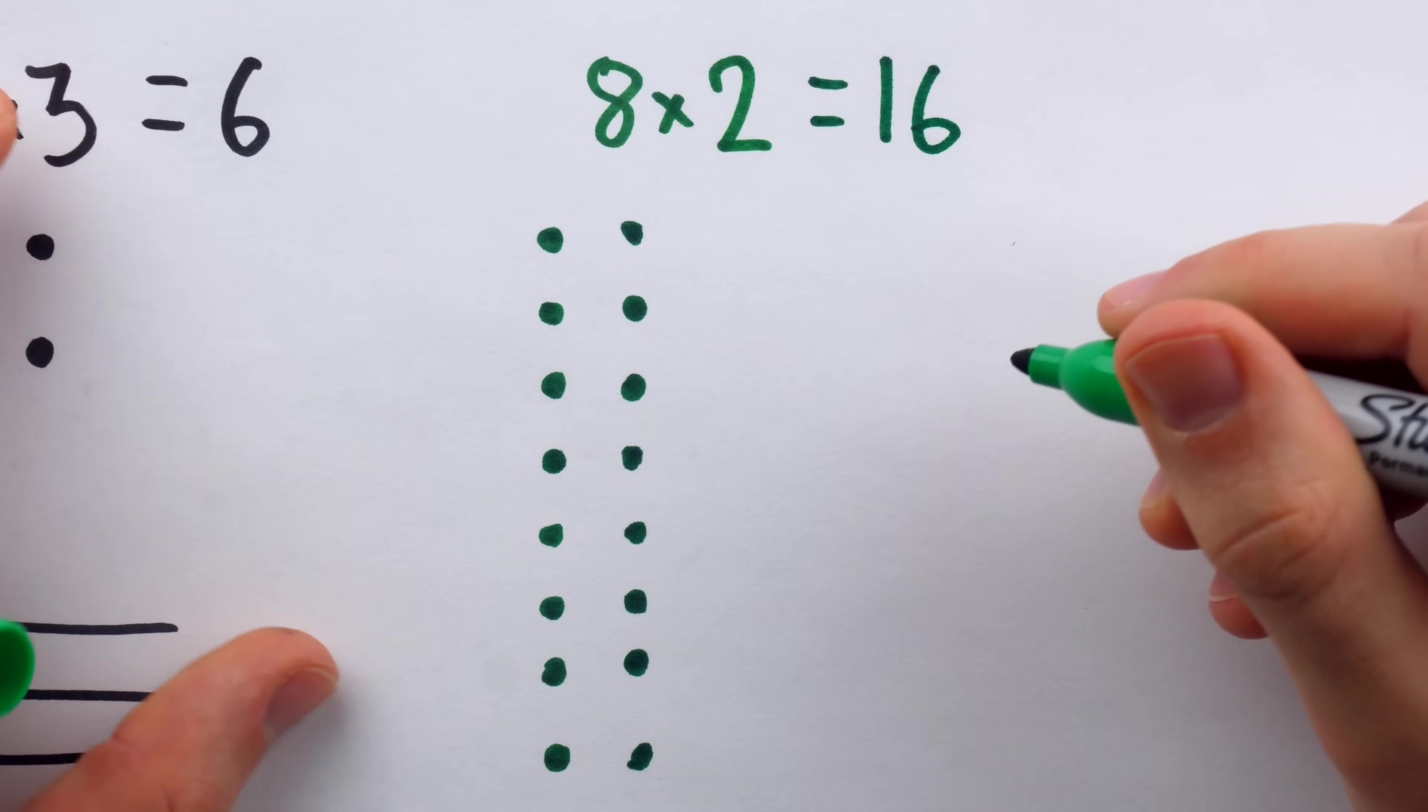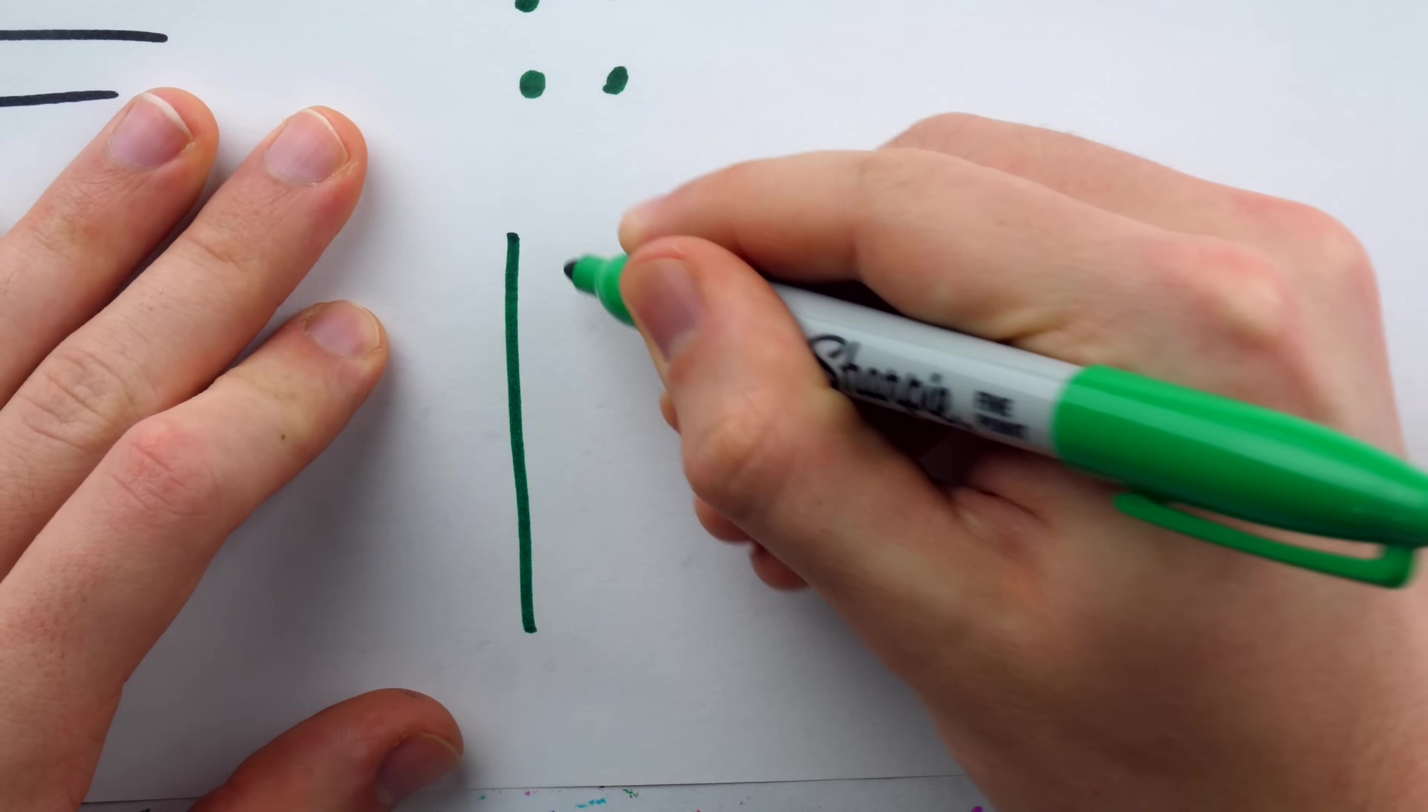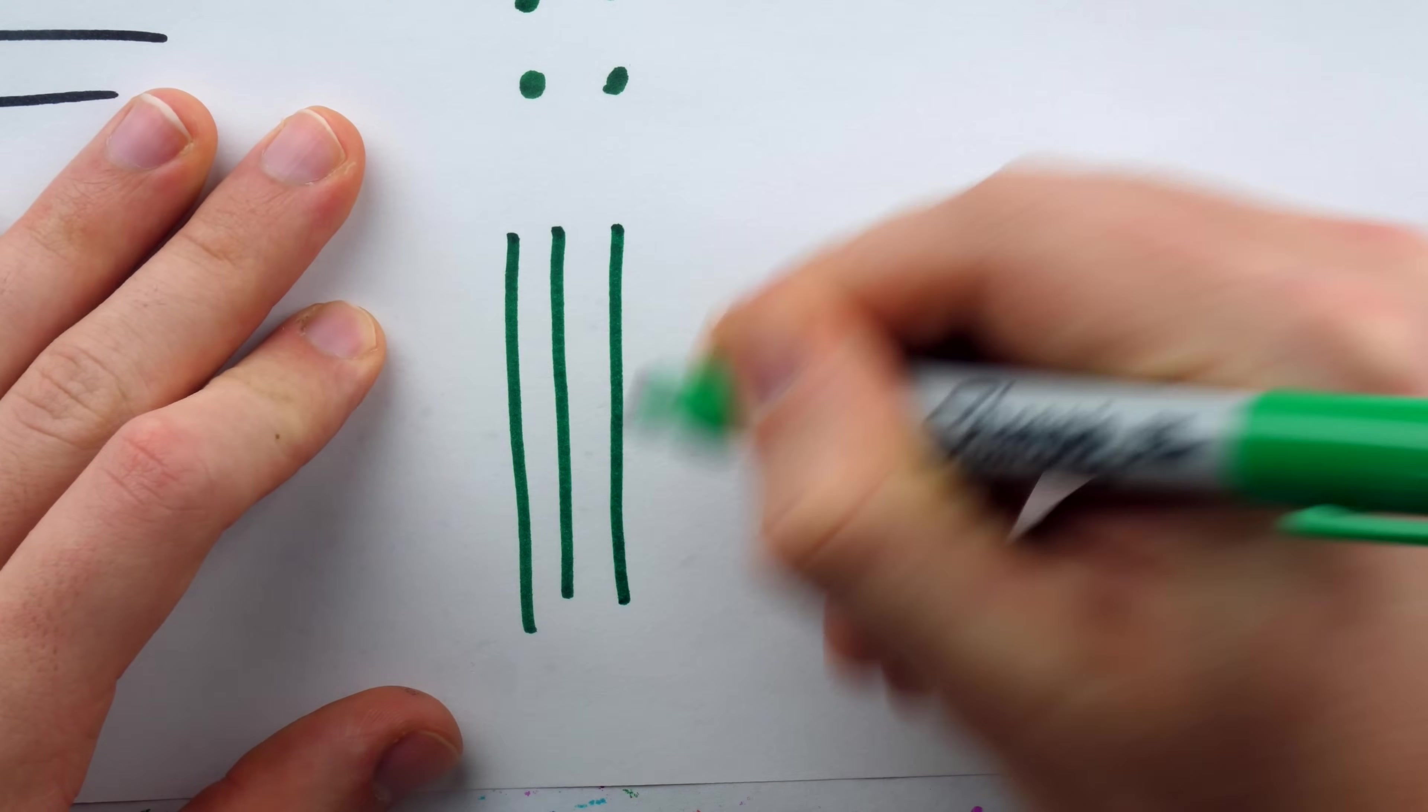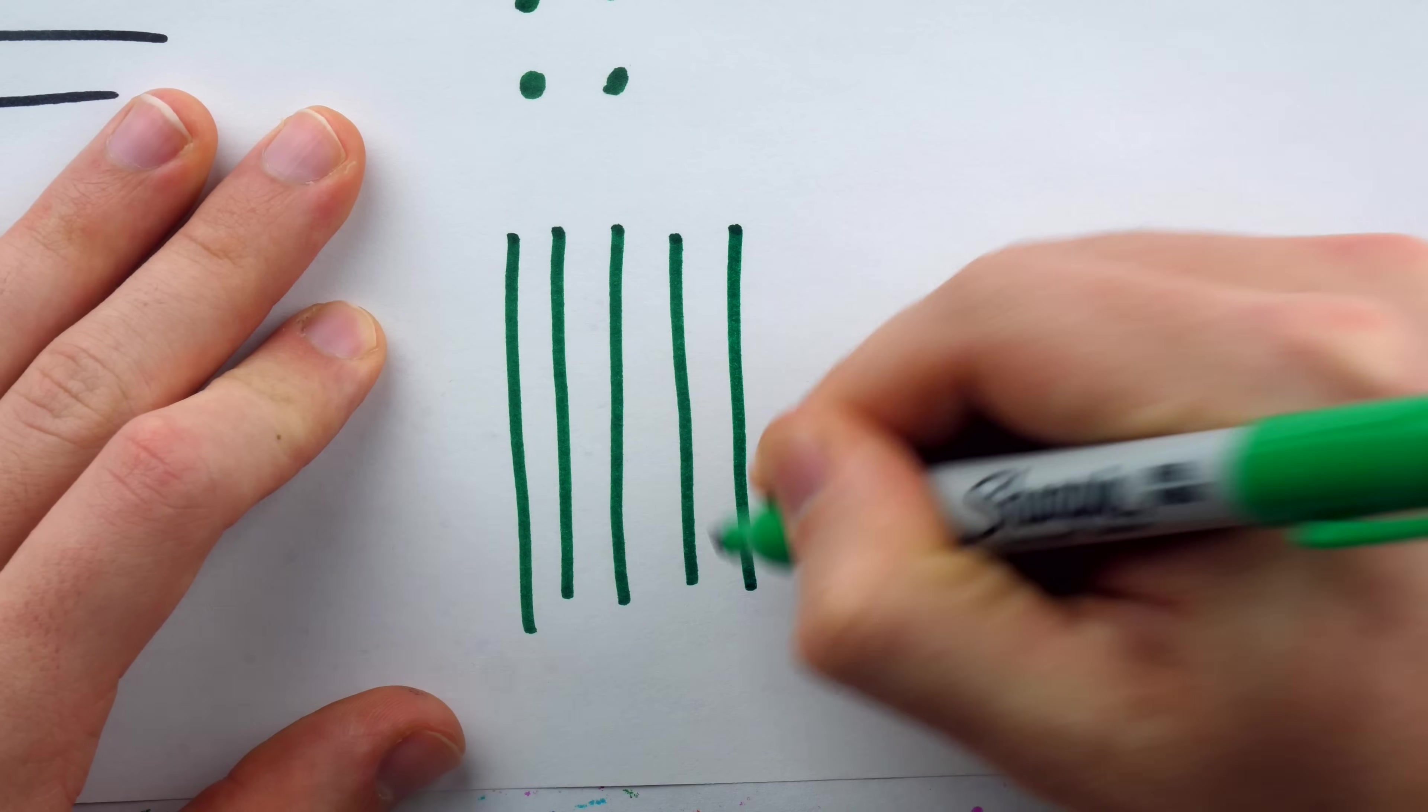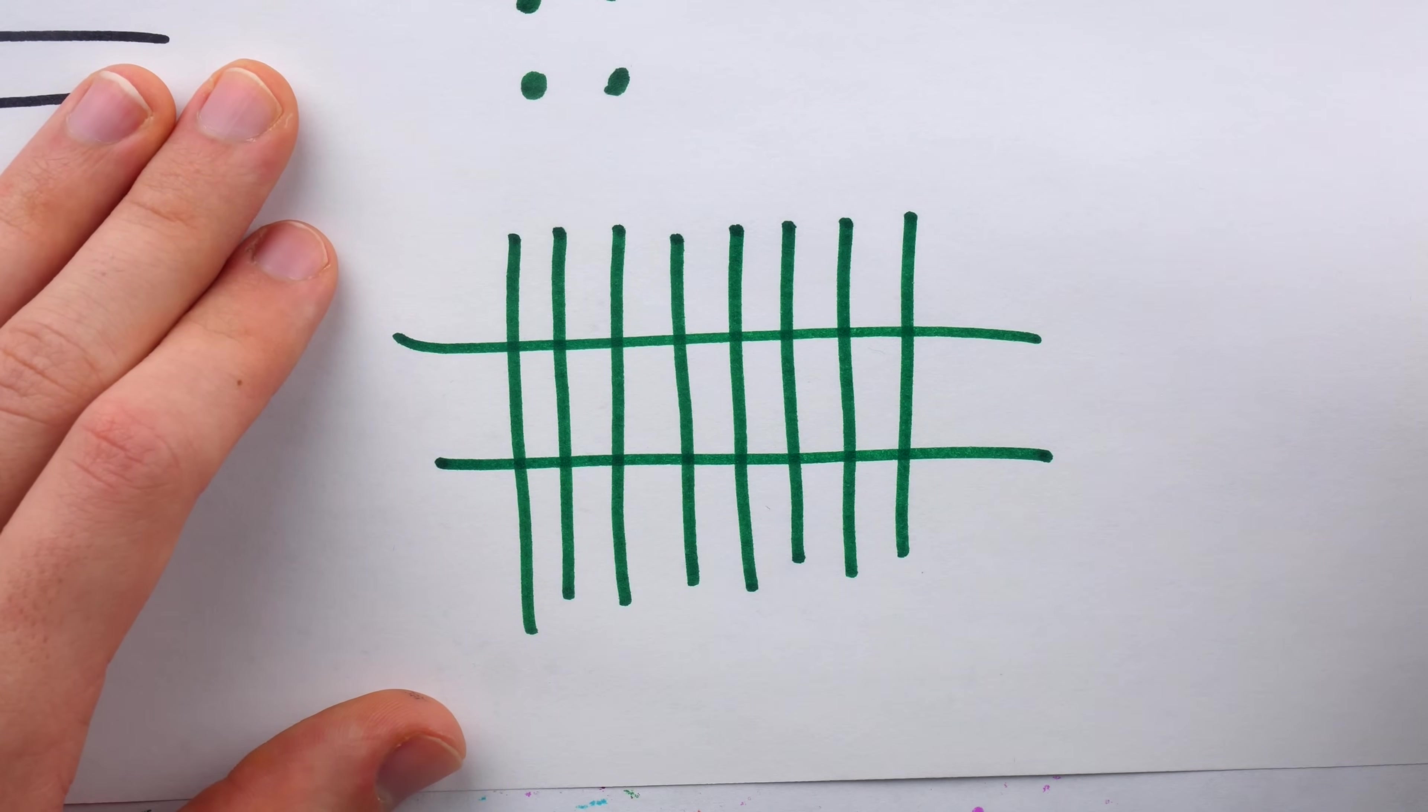But if I'm in a rush, I might only have time to draw 10 lines. So instead of writing 16 dots, I write out eight vertical lines, and then two horizontal lines, and then I can just count the intersections. And indeed,